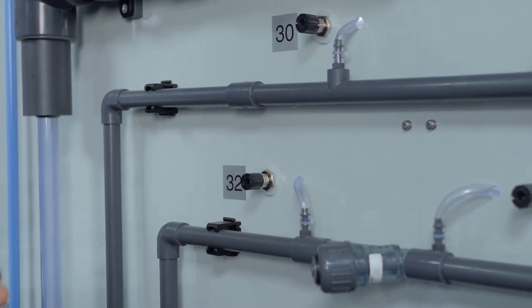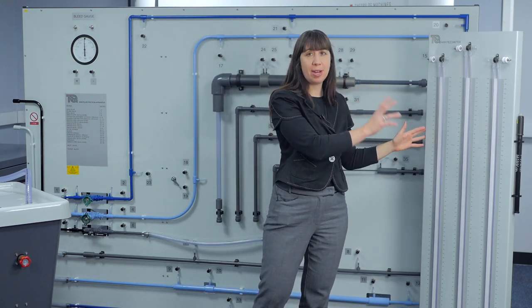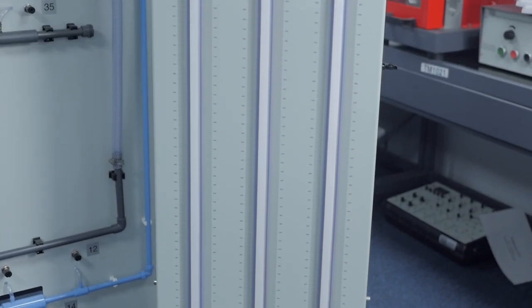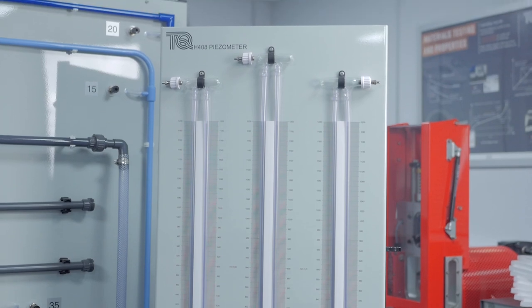To measure pressure change across each pipe section or its components, students use a free-standing three-way piezometer. This is half a metre wide, half a metre from front to back and 1.7 metres high.